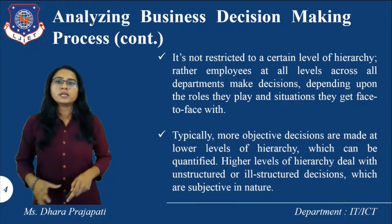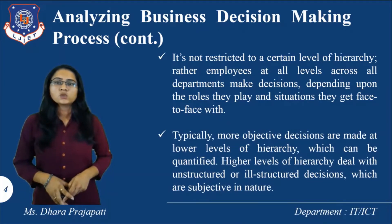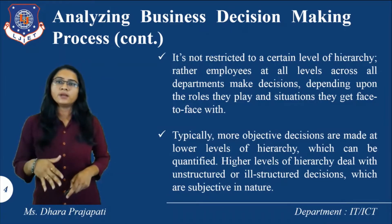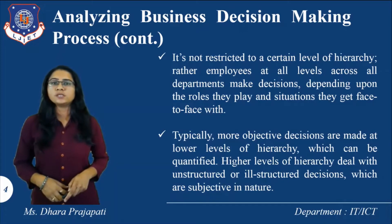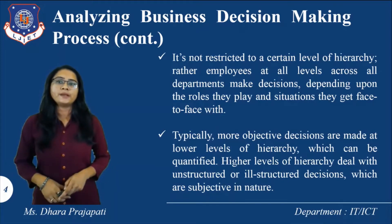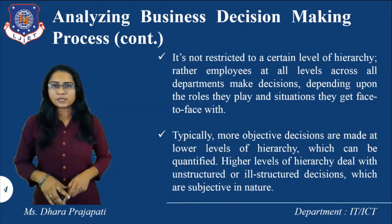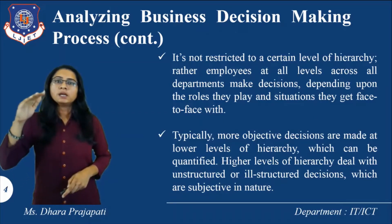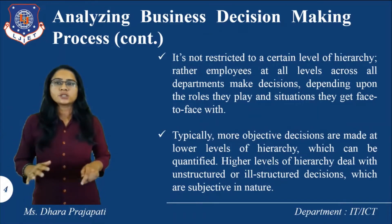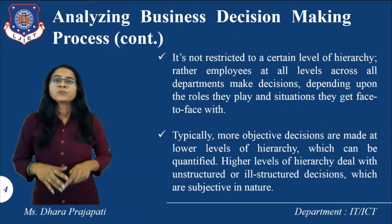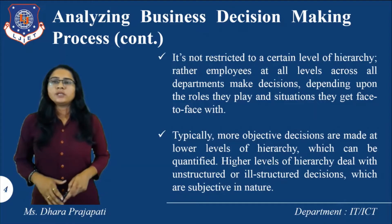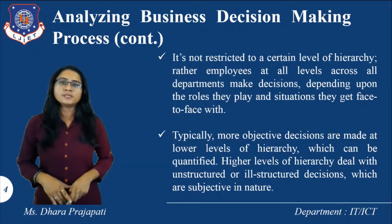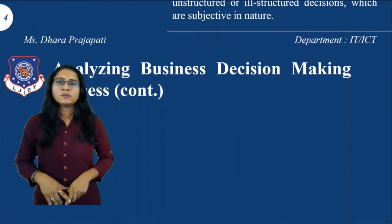There are levels of hierarchy: upper level, middle level, and lower level. Typically, more objective decisions are made at a lower level of the hierarchy, which can be quantified. Higher levels of the hierarchy deal with unstructured decisions, which are subjective in nature. These are all about analyzing the business decision making process.